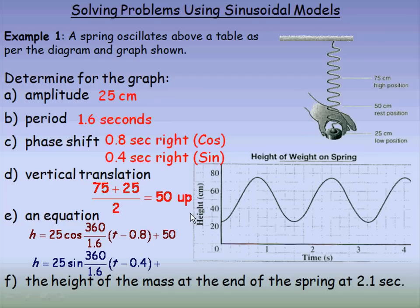Using the sine model, the only difference is the phase shift. The amplitude is still 25, the period is still 1.6, and instead of t minus 0.8, for the sine model it becomes t minus 0.4. Plus 50 on the end remains the same.